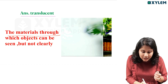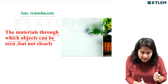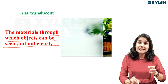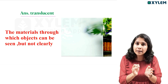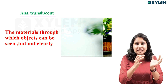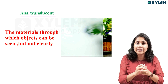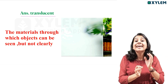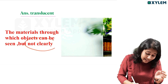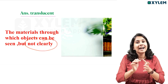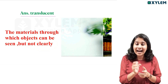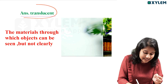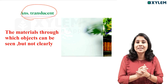The materials through which objects can be seen but not clearly are called translucent objects.